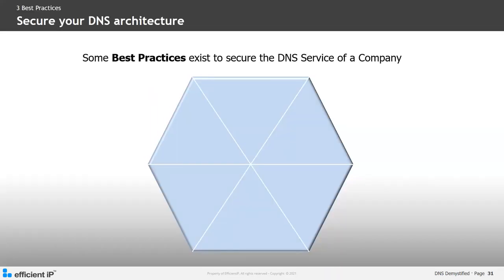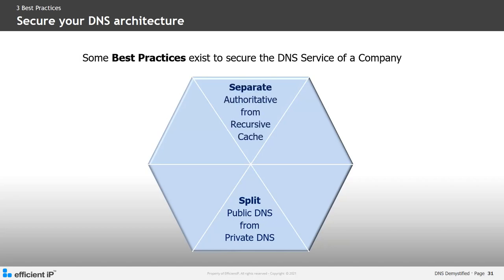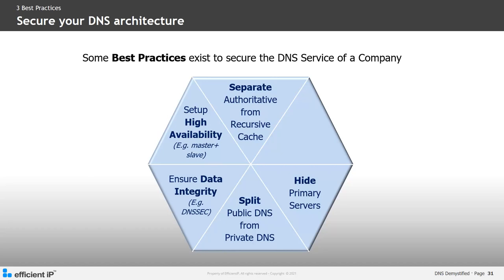Here is a summary of best practices for securing the DNS server of a company: split the public DNS from the private DNS; separate the authoritative from the recursive cache; set up high availability, for example a master and slave; use hidden servers; ensure data integrity such as DNSSEC; and restrict access to the internal server to employees only.